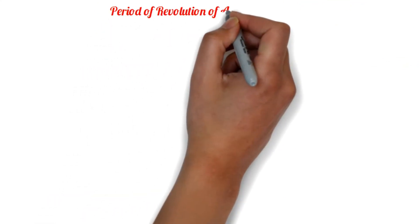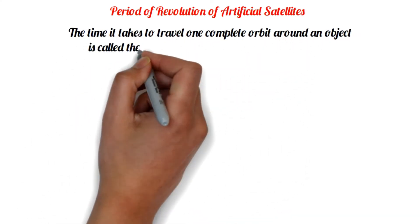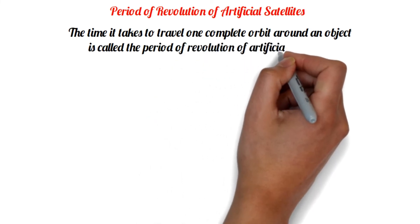Period of revolution of artificial satellites. The time it takes to travel one complete orbit around an object is called the period of revolution of artificial satellites.